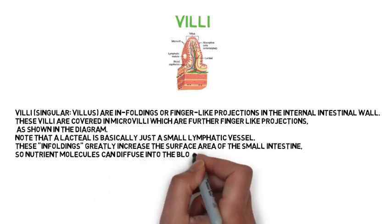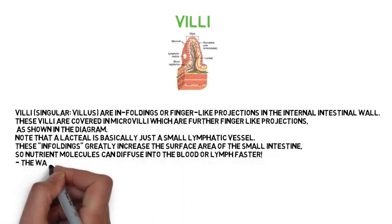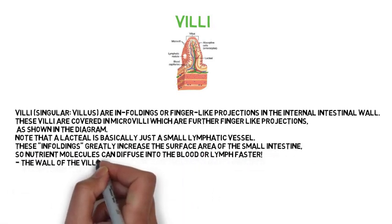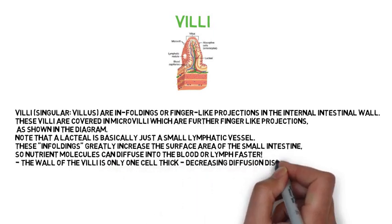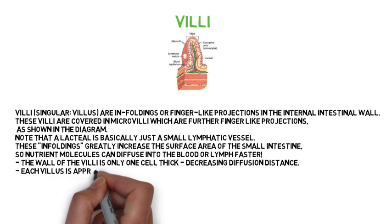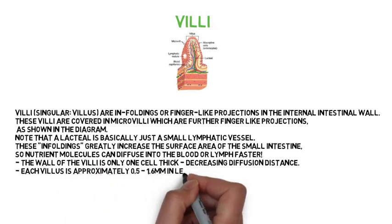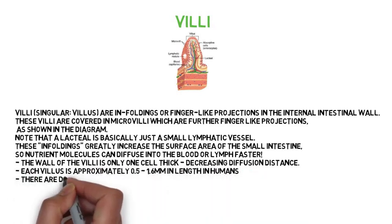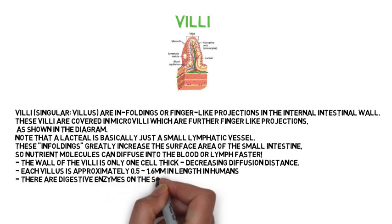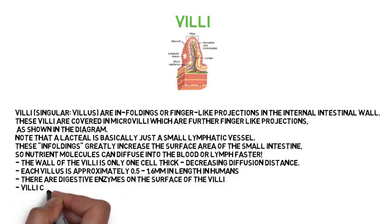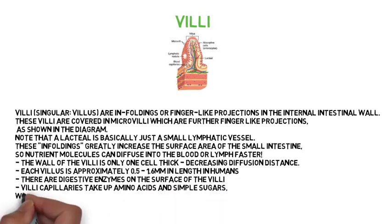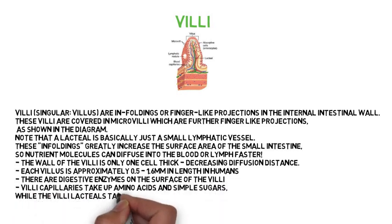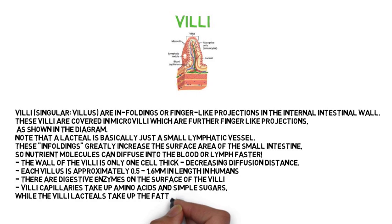The wall of the villi is only one cell thick, decreasing diffusion distance. Each villus is approximately 0.5 to 1.6 millimetres in length in humans. There are digestive enzymes on the surface of the villi. Villi capillaries take up amino acids and simple sugars, while the villi lacteals take up the fatty acids and glycerol.